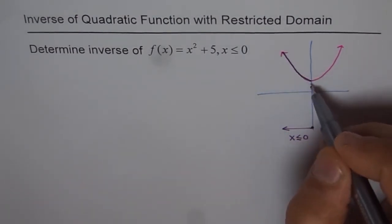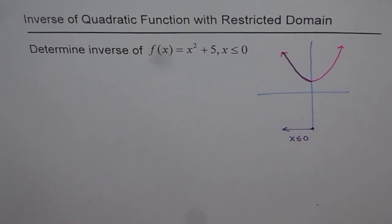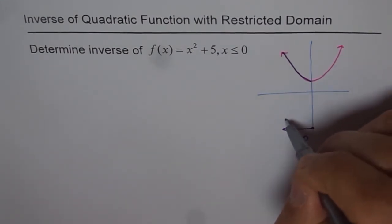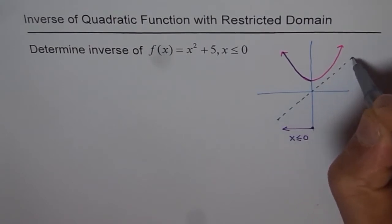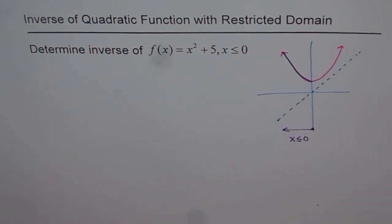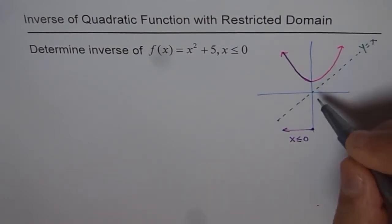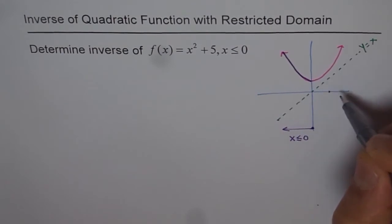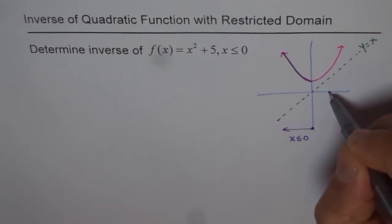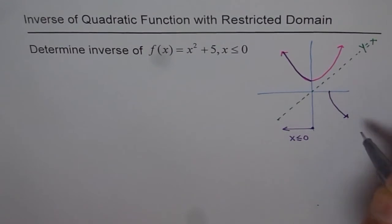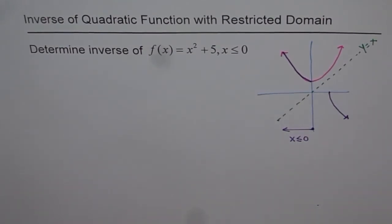We are finding the inverse of only that left portion of the function. We have the line y = x here, and if we reflect the left half across it, this point (0, 5) maps to (5, 0). That reflected curve is the inverse of the given function.